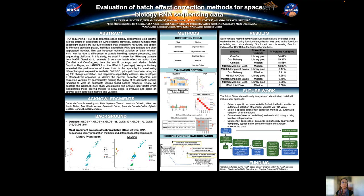Small spaceflight experiments are often aggregated together to increase statistical power, which can introduce technical variation or batch effects. Our current work focuses on understanding and mitigating technical batch effects in a specific type of spaceflight biological omics data, RNA sequencing.